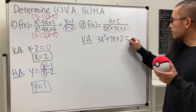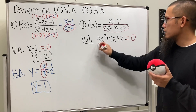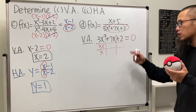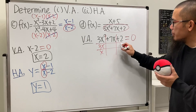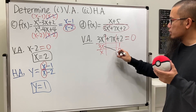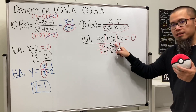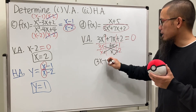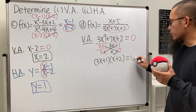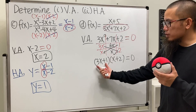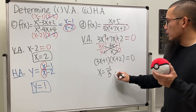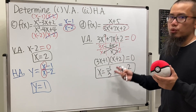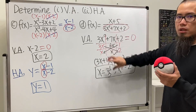For the vertical asymptote of part (d), set 3x² + 7x + 2 = 0. Using the tic-tac-toe factoring method: 3x times x gives 3x², and 1 times 2 gives 2; placing 1 and 2 appropriately gives 3x·2 = 6x and 1·x = x, and 6x + x = 7x — it checks out. So the factors are (3x + 1)(x + 2). Setting each to zero gives x = −1/3 and x = −2, so there are two vertical asymptotes.